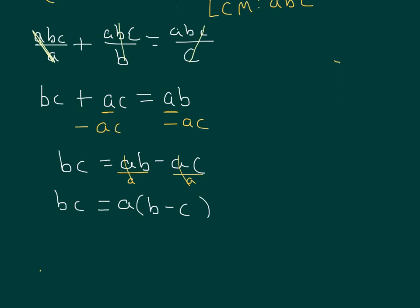Last step, I'm trying to get A by itself. You see there's this B minus C being multiplied. So we divide both sides by B minus C.